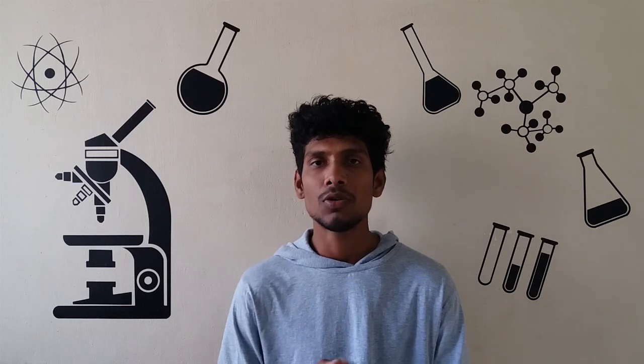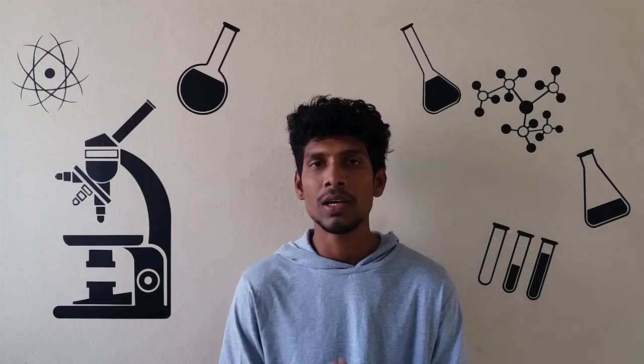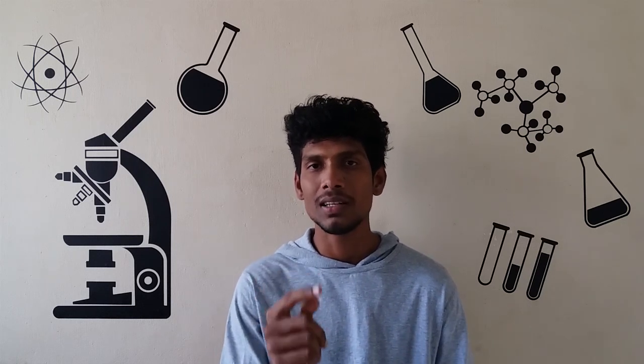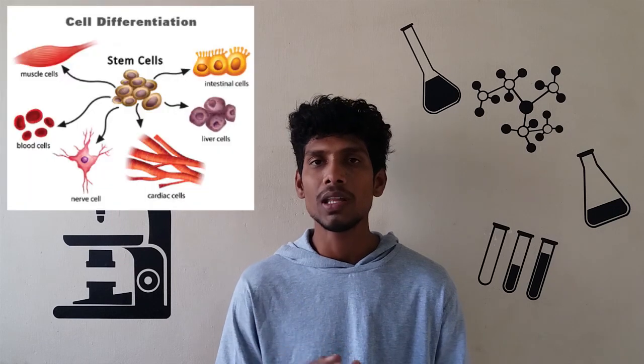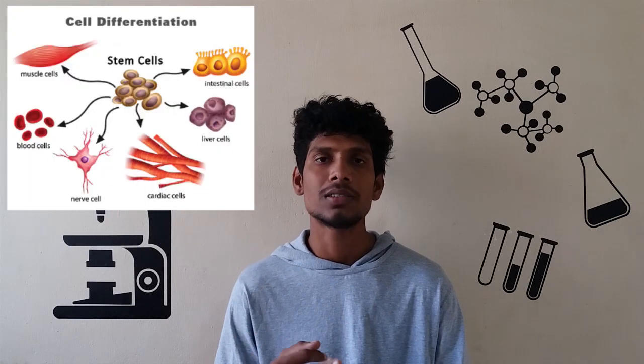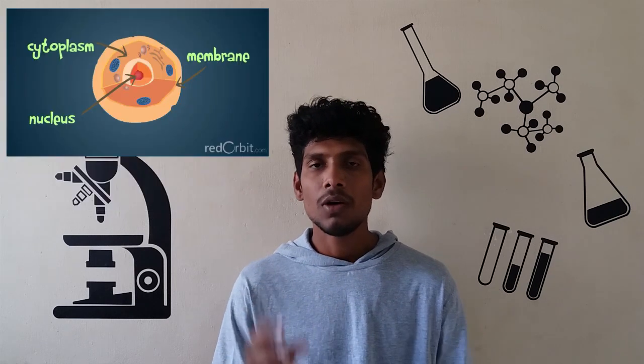Chromosome 6 deletion disorder affects individual cells — skin cells, nerve cells, and muscle cells. These are all types of cells in the body.